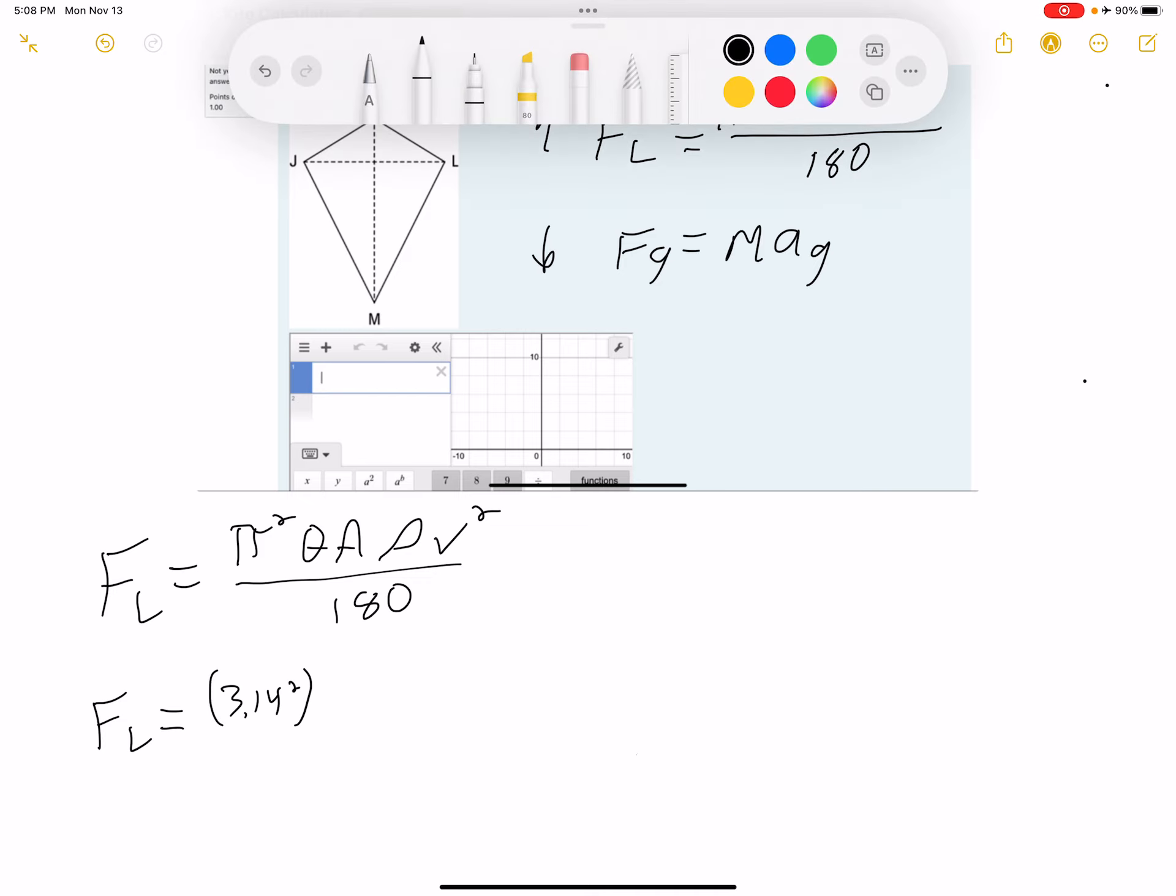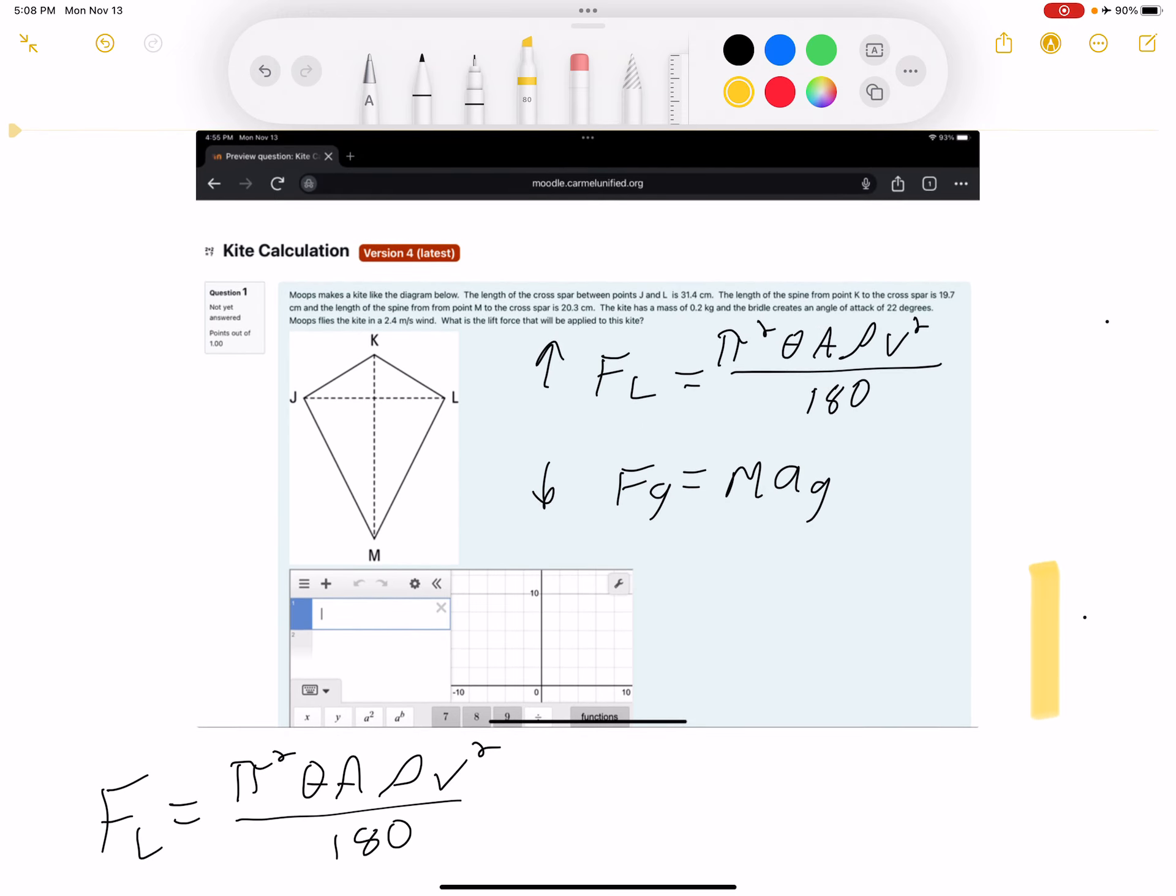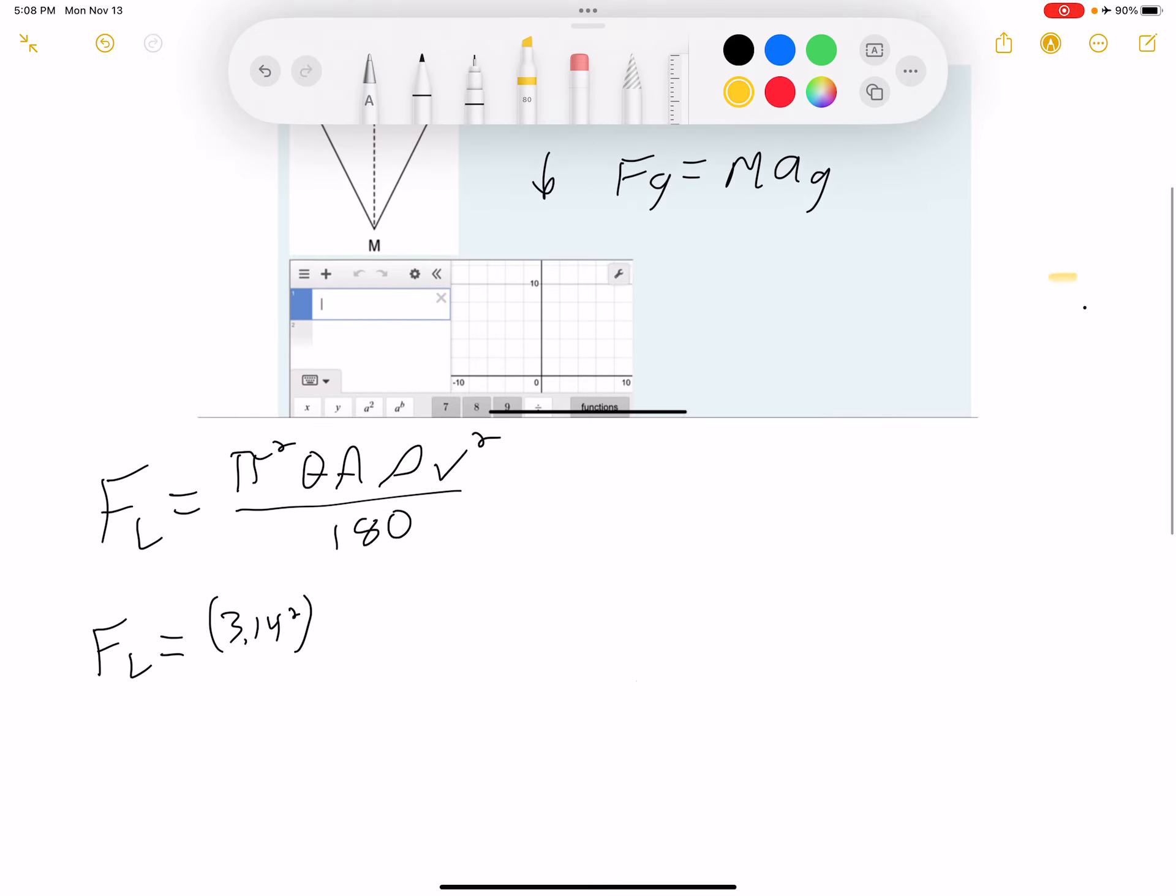This symbol here is the angle. So we can go up and look at the angle, the angle is 22 degrees. So what we can do right here is put 22. Okay.